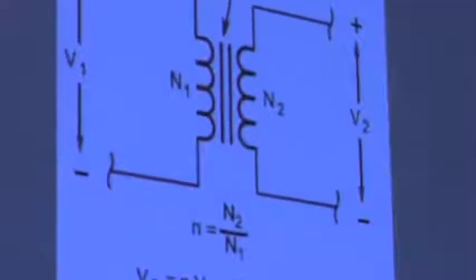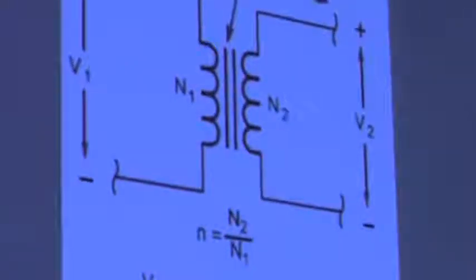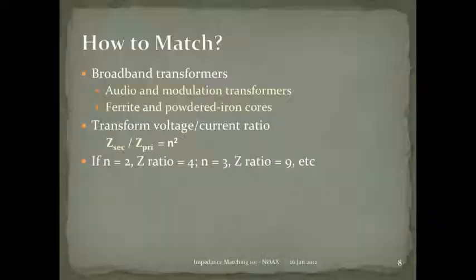The governing equations: voltage out equals turns ratio times voltage in; current works the other way — current out equals current in divided by the turns ratio. The secondary-to-primary turns ratio governs the impedance ratio, analogous to the ratio of teeth on output gear to input gear. Broadband audio and modulation transformers must handle signals from around 100 Hz up to 10–15 kHz — a 10 to 15:1 bandwidth.